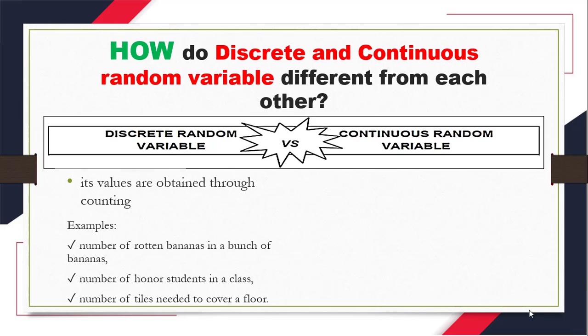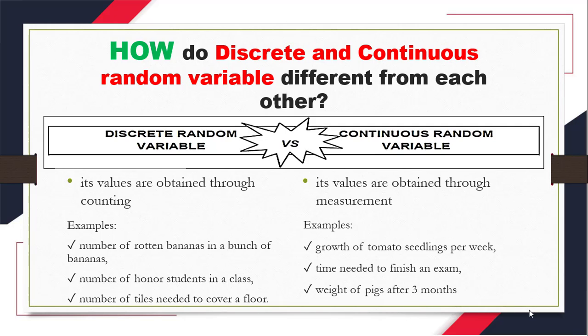On the other hand, in continuous random variable, its values are obtained through measurement. Examples could be growth of tomato seedlings per week, time needed to finish an exam, or the weight of pigs after three months. Now, to easily remember this, all you need to keep in mind is: discrete is counted, and continuous is measured.